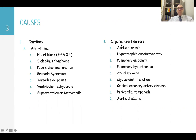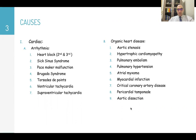Organic heart disease causes include aortic stenosis, hypertrophic cardiomyopathy, pulmonary embolism, pulmonary hypertension, atrial myxoma, myocardial infarction, critical coronary artery disease, pericardial tamponade, and aortic dissection.